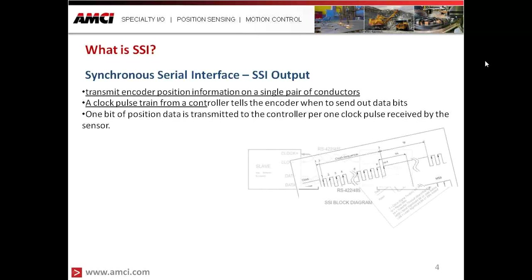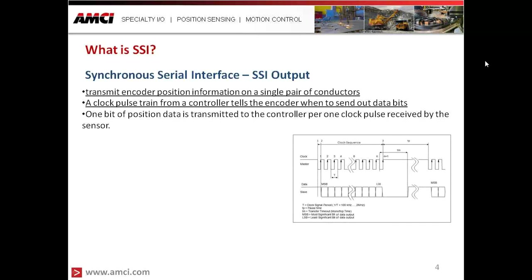The clock pulse train from the controller tells the encoder or feedback device when to send out the data bits. It sends out that clock sequence in a predefined number of cycles — in most cases with SSI it's going to be a 24-bit cycle, but it could be a little more or less. For each clock pulse, one bit of position data is transmitted to the controller, and once it's finished its sequence, we have the complete data word coming back from the sensor.